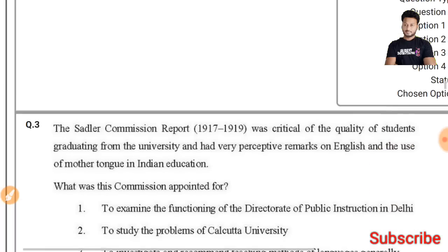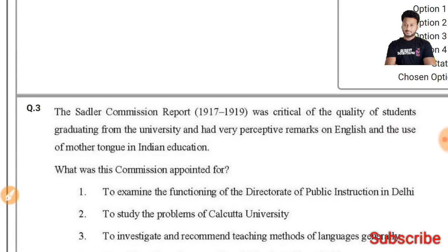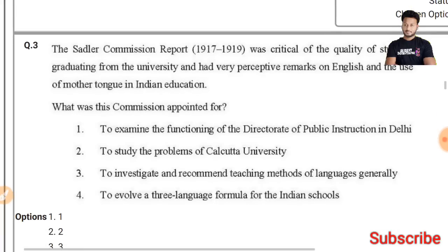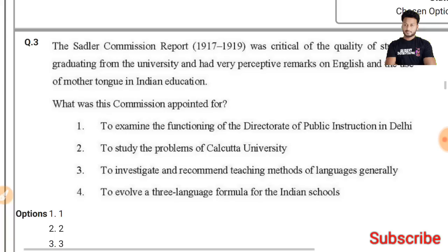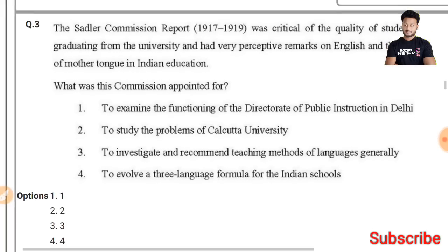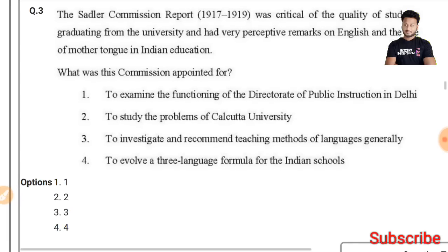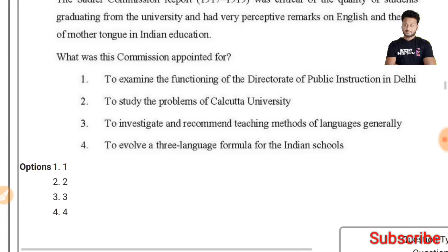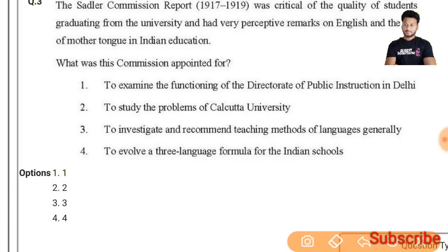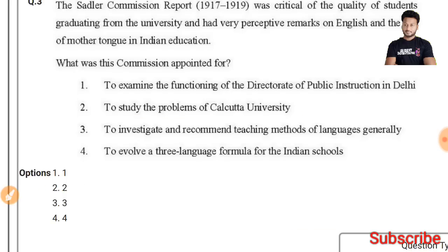Question 3: The Sadler Commission report was critical of the quality of students graduating from university and had very pointed remarks on English and the use of mother tongue in Indian education. The right answer is the second one — it was set up to study the problems of Calcutta University.